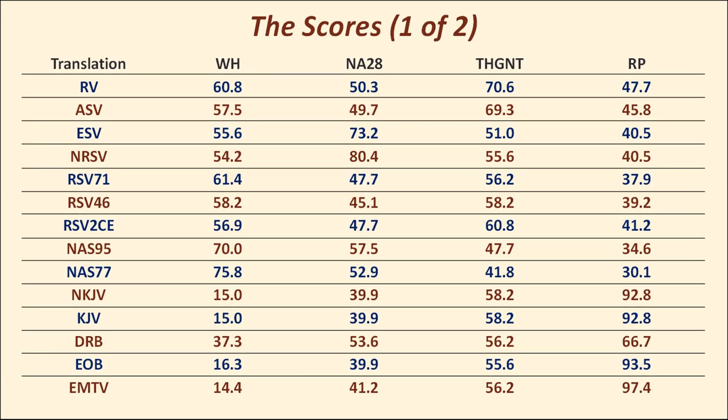Here is the raw data showing the actual scores and percentages for the different translations. For example, the American Standard Version had an agreement rate with Westcott and Hort of 57.5%, with Nestle-Aland 28th at 49.7%, with the Tyndale House Greek New Testament at 69.3%, and with Robinson-Pierpont at 45.8%.